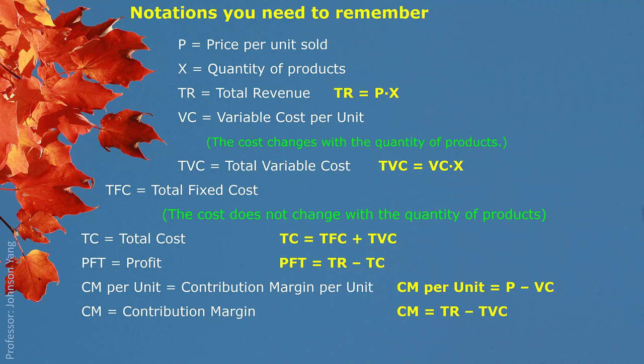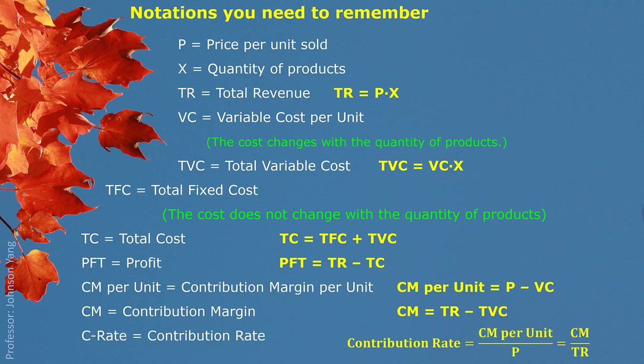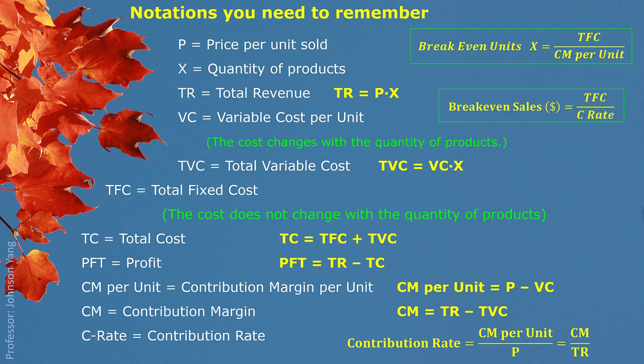At the total level, Cm is the contribution margin — the difference between total revenue and total variable cost — telling us how much we can use to cover the fixed cost. C rate is the contribution rate, explained as the percentage that contribution margin per unit takes in the single price, or the percentage that contribution margin takes in total revenue. By solving the mathematical equation, we can derive breakeven units as total fixed cost divided by contribution margin per unit, and breakeven sales in dollars as total fixed cost divided by the contribution rate.